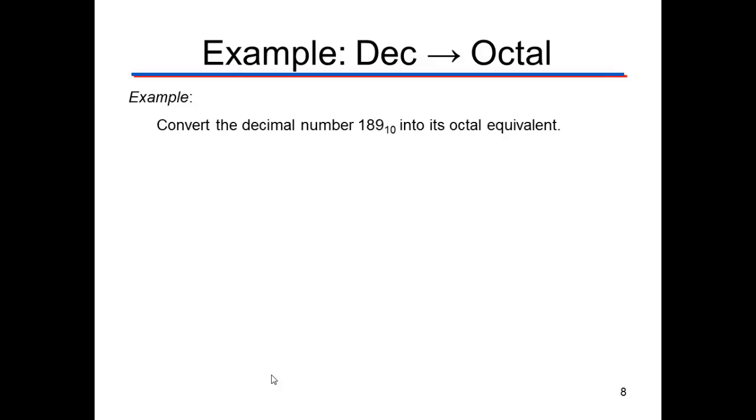If we convert the decimal number 189 to its octal equivalent, how do we do that again? We're going to divide by 8, so 189 divided by 8 becomes 23.625. To get the remainder, I do .625 times 8, I get 5.